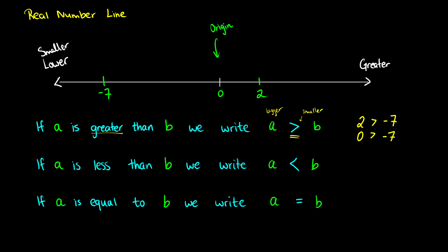If we have a number A that is less than B, we write A < B. The point of our symbol points to the smaller number and the open gap points to the bigger number. So we could have negative 7 is less than 0, or 0 is less than 2.